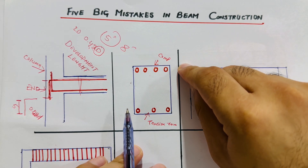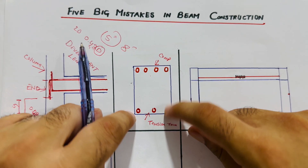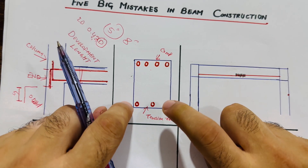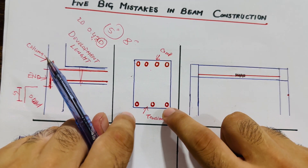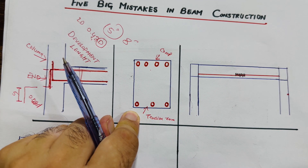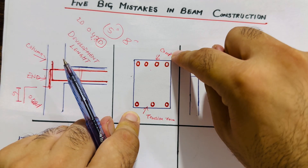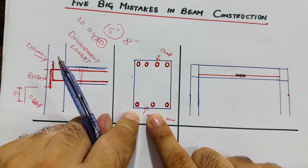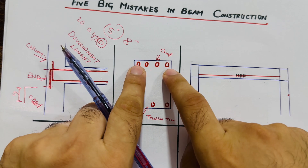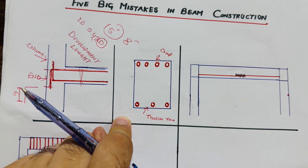Therefore, you should use more steel rods at the bottom and fewer at the top. Take the opposite approach: use three at the top and four at the bottom. If you use two at the top, provide three at the bottom. The tension zone needs more steel because concrete is weak in tension, while the compression zone needs less since concrete is strong in compression.